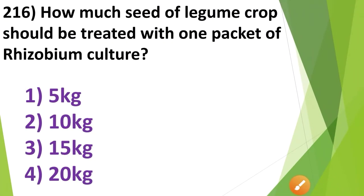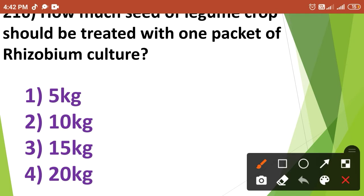How much seed of a legume crop should be treated with 1 packet of Rhizobium culture? 1. 5 kg, 2. 10 kg, 3. 15 kg, 4. 20 kg. Generally, 10 kg seed of a legume crop should be treated with 1 packet of Rhizobium culture. So the correct answer is Option No. 2.